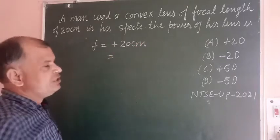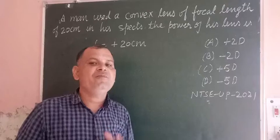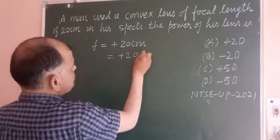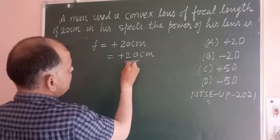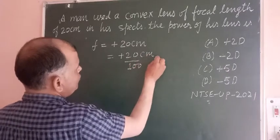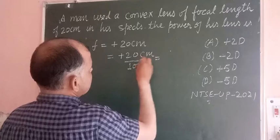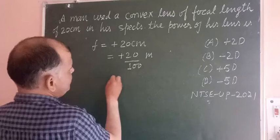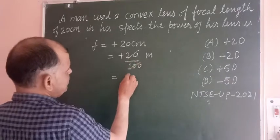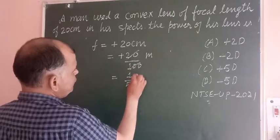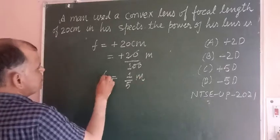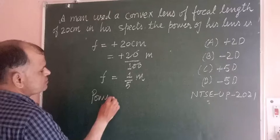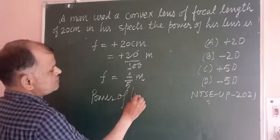Because we take focal length in meters when we want to find its power. So plus 20 cm divided by 100, we got it in meters. So 20 divided by 100, this is 1 upon 5 meter. Focal length is 1 upon 5 meter and power of lens is equal to 1 upon f.